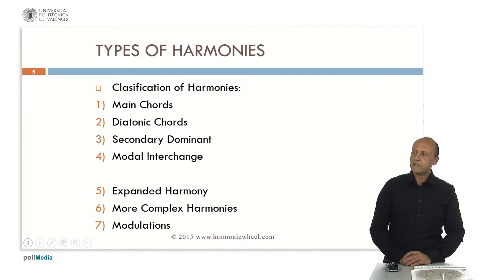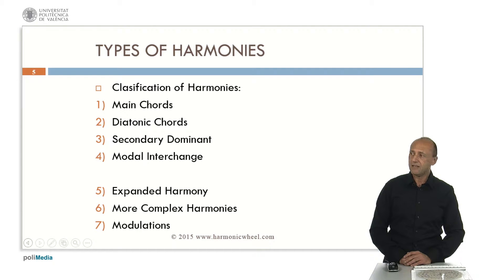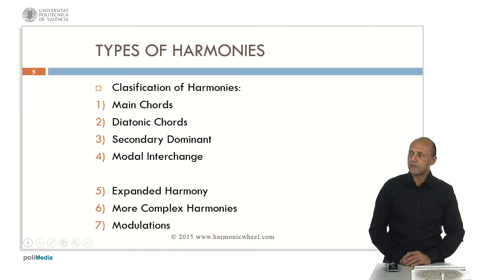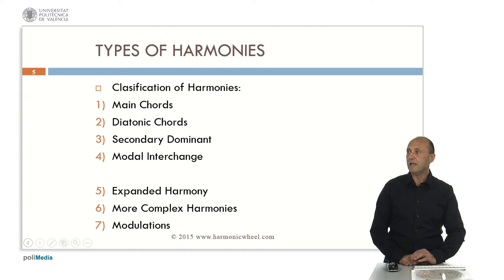To do this analysis, we will classify the harmonies into four groups. Main chords, which are tonic, subdominant and dominant chords in a major key. Then diatonic chords, which are degrees 1 to 6 in a major key. Then secondary dominant chords and modal interchange chords. Apart from them, we have the expanded harmony, more complex harmonies and modulations.